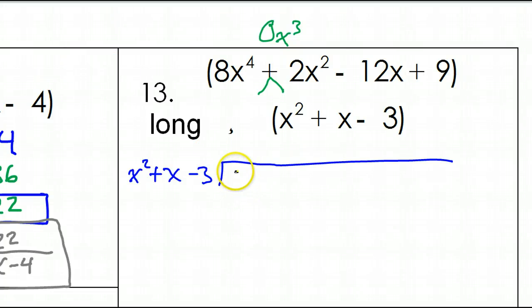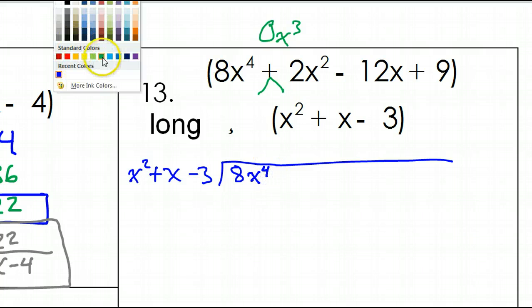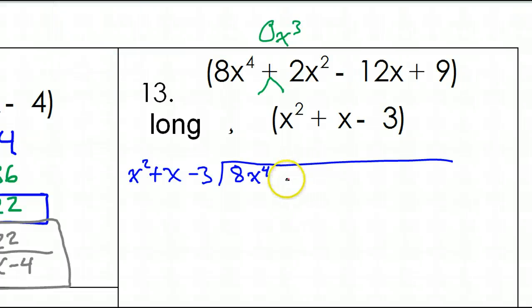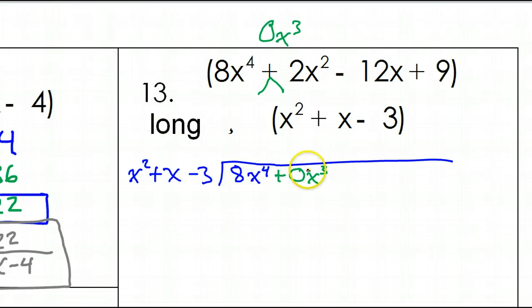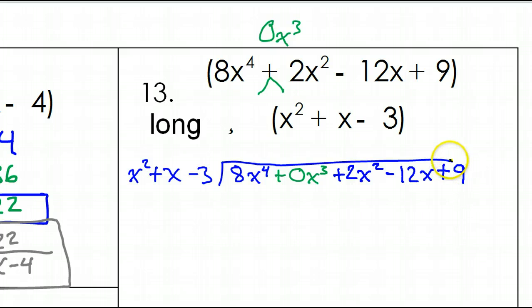So when I write this in, I will write 8x to the fourth power, plus 0x to the third power, plus 2x squared, minus 12x, plus 9.